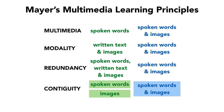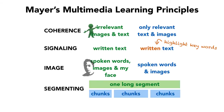So here are the principles. The multimedia principle says add pictures — people learn better. The modality principle says that spoken words do better than written words. Redundancy — don't read your slides. Contiguity says keep like things together; words and images should be next to each other in time and in space. The coherence principle says get rid of clip art and all irrelevant images and text. The signaling principle says to highlight your keywords. The image principle — don't put your face in there.